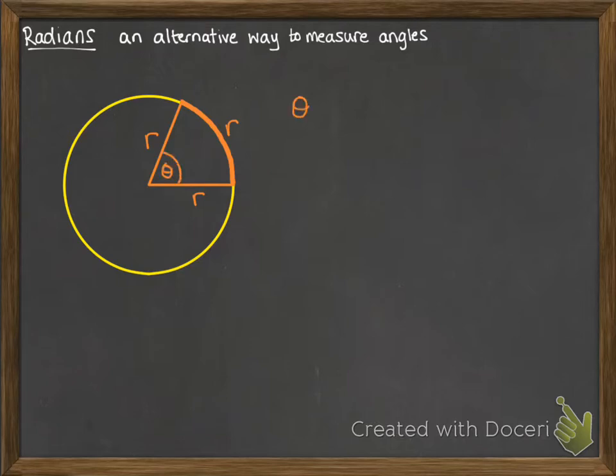When that happens, the angle that we get in the middle is called 1 radian. So it's a very particular measure where we take a sector whose arc length is r, then the angle that we get at the centre of that sector is called 1 radian.